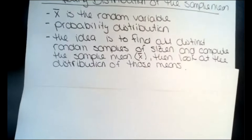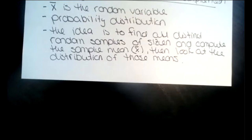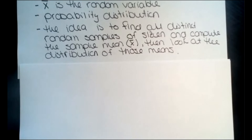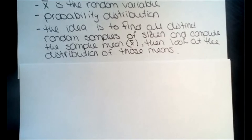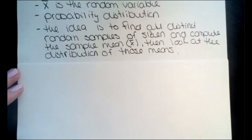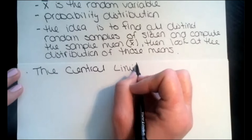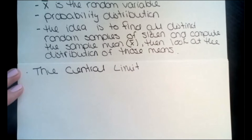Similar to last class, we still want our data set to be normally distributed — bell-shaped, symmetric. I have a new way to tell if the sampling distribution is normally distributed, and this is called the central limit theorem. The central limit theorem looks worse when you read it all out than it actually is.